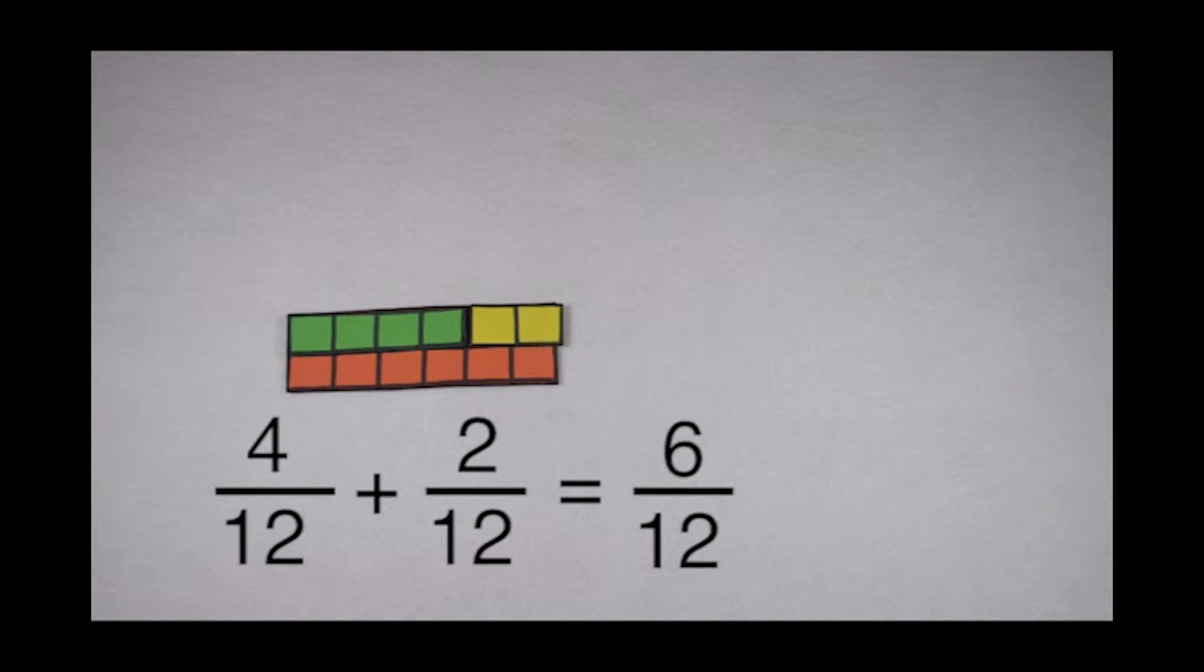Now, 6/12 is a good answer, but we can make it better by simplifying it to lowest terms. In order to do that, we need to find the greatest common factor of 6 and 12.